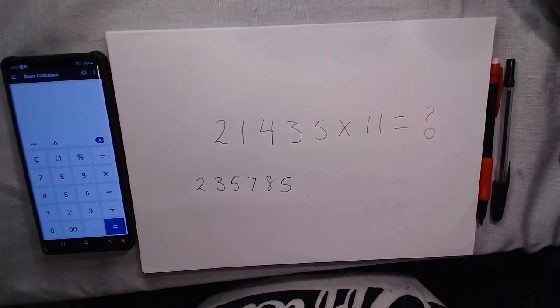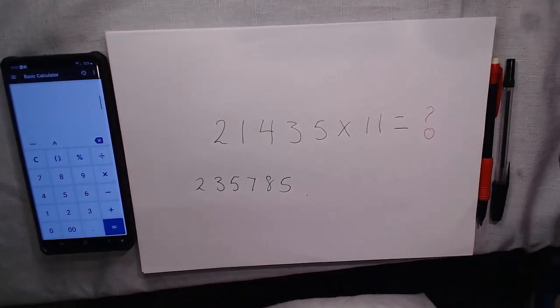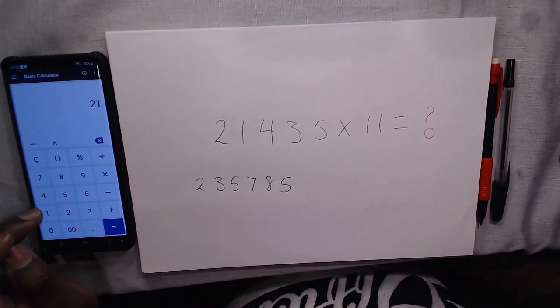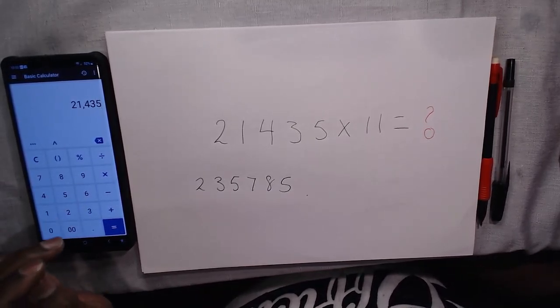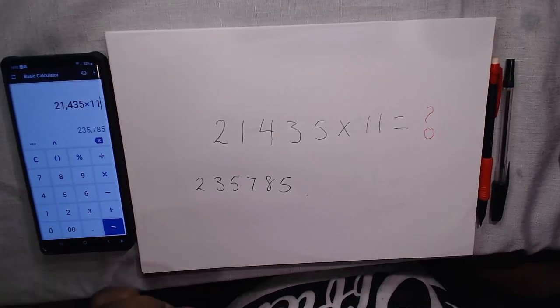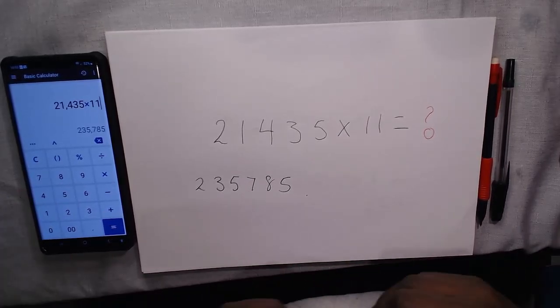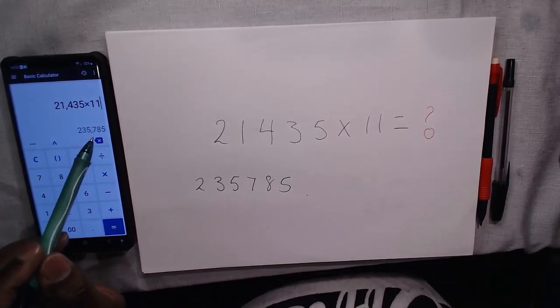Okay, let's verify on the calculator. 21,435 times 11 is indeed 235,785.